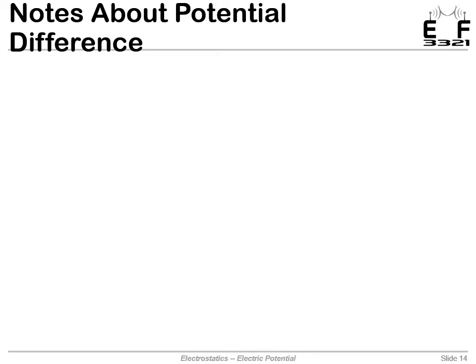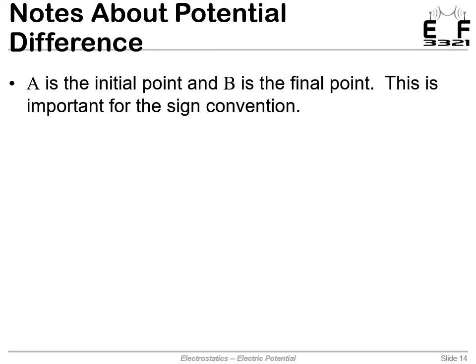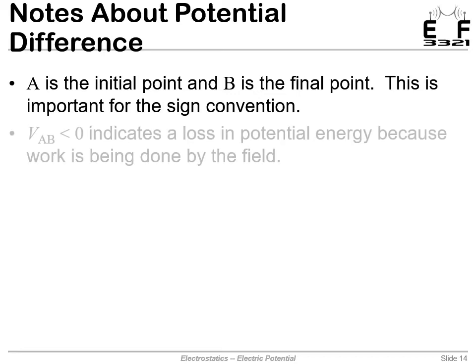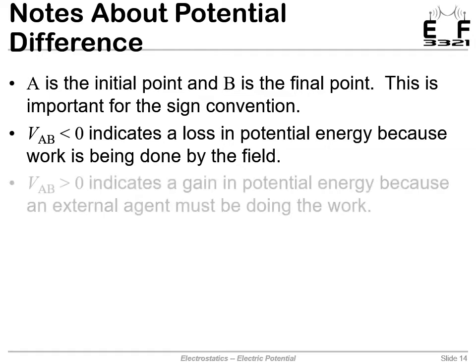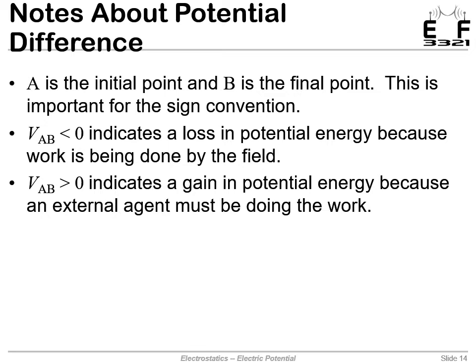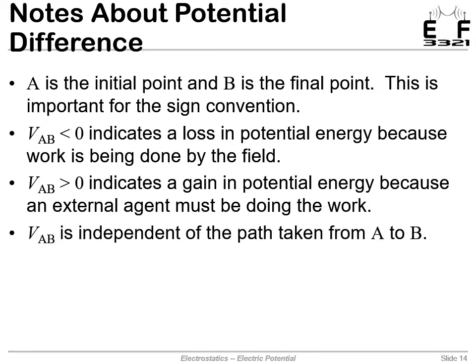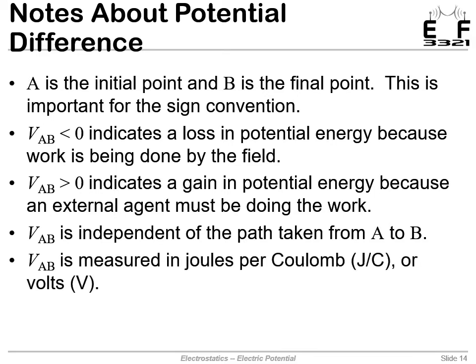Some notes about potential difference: A is the initial point and B is the final point — swapping them requires swapping the sign. If the potential difference is less than zero, work is being done by the field and there's an overall loss in potential energy. If it's positive, we're gaining potential energy and something else must be doing work on our charge. The potential difference between A and B is independent of the path taken, so we can choose whatever path makes the math easiest. We measure potential difference in joules per coulomb, or simply volts.